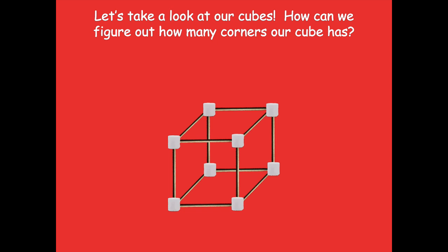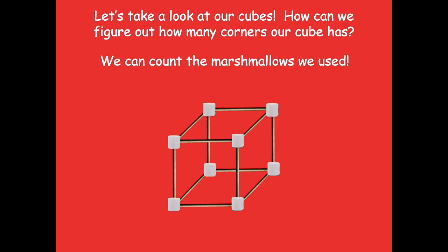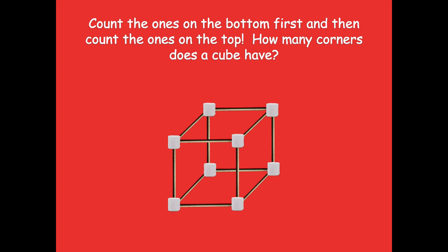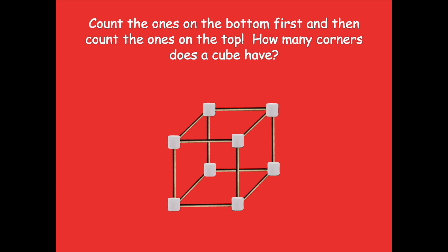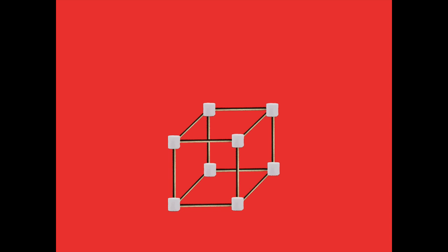Let's take a look at our cubes. How can we figure out how many corners our cube has? We can count the marshmallows we used, because whenever two sides come together, that's where we put a marshmallow for a corner. Count the ones on the bottom first and then the ones on the top. How many corners does a cube have? It has eight corners — four on the bottom and four on the top, so four plus four equals eight.